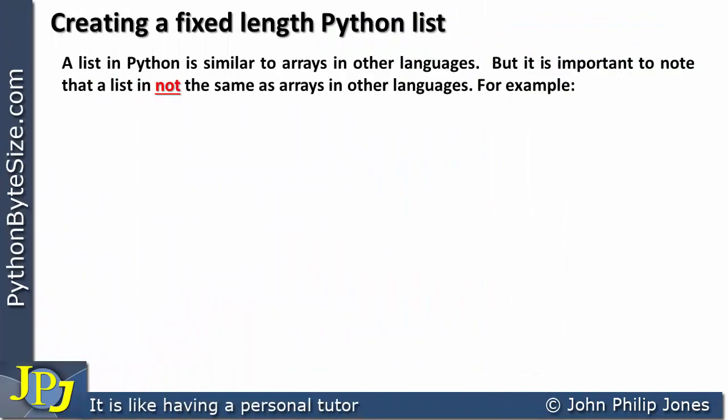A list in Python is similar to arrays in other languages, but it is important to note that a list is not the same as arrays in other languages. For example, a list can store mixed types. A list does not have to store all integers as you would have in other languages for arrays.